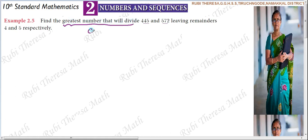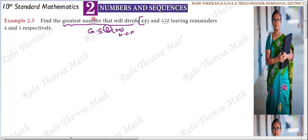So, GCD — Greatest Common Divisor — means the greatest number that will divide. GCD is what we need to find. So we are asked to find the HCF of 445 and 572. These direct values are given; instead, we are asked to find the greatest number that will divide them. Find the HCF — this is the hint.